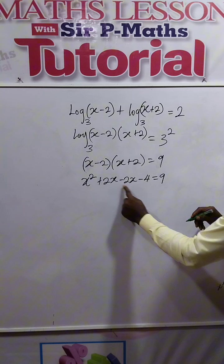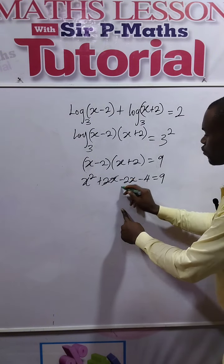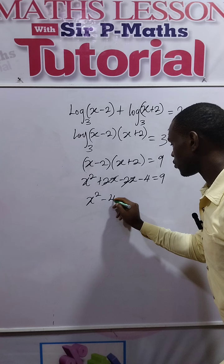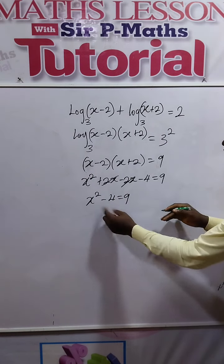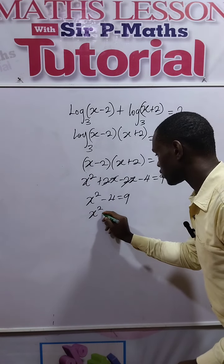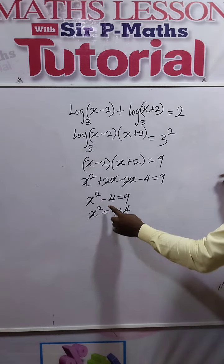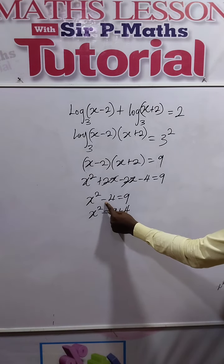So let's collect like terms. That means we have x² equal to 9 + 4. That means 4 crosses over to become +4, so we have x² = 13.